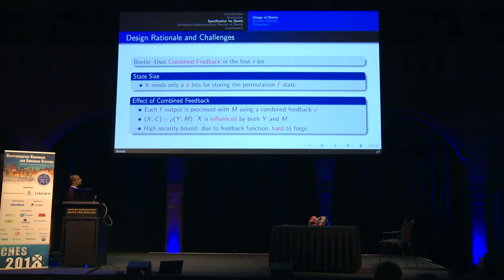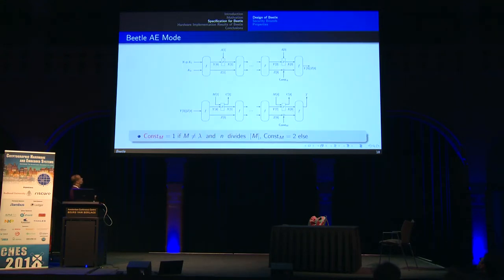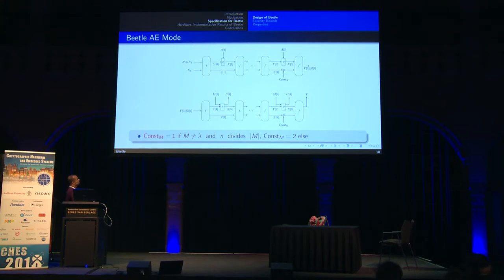Beetle uses combined feedback on the first r-bit part where data is processed. It needs to store only a b-bit state. Each permutation output is processed with the message block using a combined feedback function ρ. Here X is the next feedback, C is the ciphertext, ρ is the combiner, and X is influenced by both Y and M. This provides a high security bound due to the feedback function and is hard to forge. The nonce and key are injected into the permutation state, then associated data is processed using these combiners, generating an intermediate value. This intermediate value is processed with message blocks and permutation outputs with the combiner to generate ciphertext using the identity matrix and next feedback using the G matrix. Finally it outputs a tag.